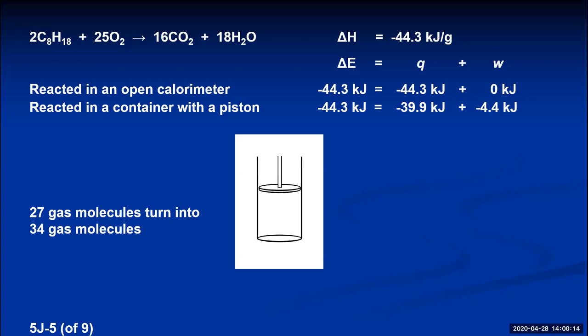This is why car engines get really hot — most energy is released as heat, but some is captured as work. The piston moves up, and because it's connected to the wheels, it turns them slightly. With multiple pistons firing in sequence — a microsecond apart in a six-cylinder engine — the repeated piston movement turns the wheels continuously, propelling the car based on the expansion of the gaseous combustion products.